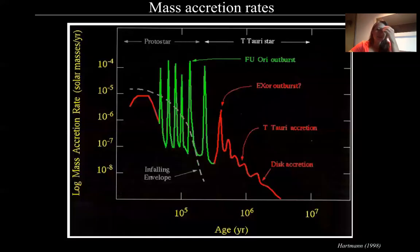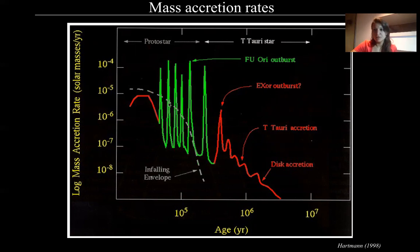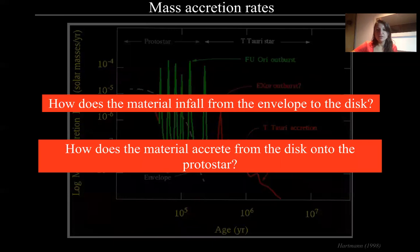And this is a theoretical work from 1998 when we have the age versus the mass accretion rates. We have that for embedded sources, the mass accretion rate is not constant with time but it will occur in bursts. As time goes on it will decrease and of course at some point the accretion will stop. So this is a theoretical work and the question is how does the material infall from the envelope to the disk and also how does the material accrete from the disk onto the protostar. And I will talk a bit more about the observational part of this plot.